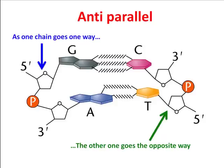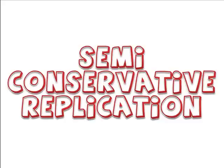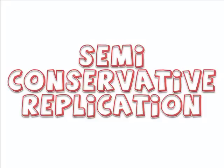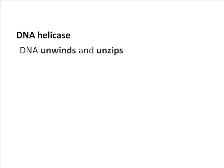So how is DNA replicated? The replication of DNA is called semi-conservative replication, because each of the new DNA molecules is made up of one strand of the old DNA molecule and one new strand. This happens during interphase of the cell cycle. It starts by the enzyme DNA helicase breaking the hydrogen bonds, making the double helix unzip and unwind.